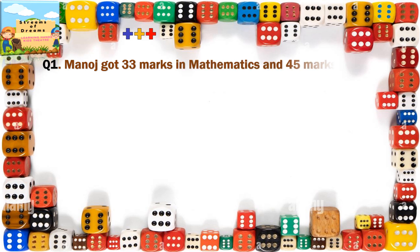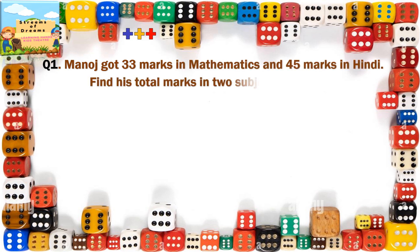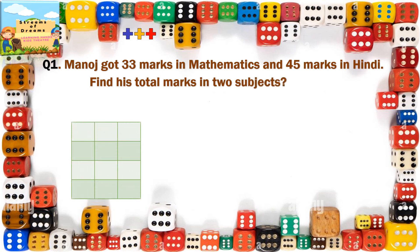Manoj got 33 marks in mathematics and 45 marks in Hindi. Find his total marks in 2 subjects. So let's do the calculation simultaneously.